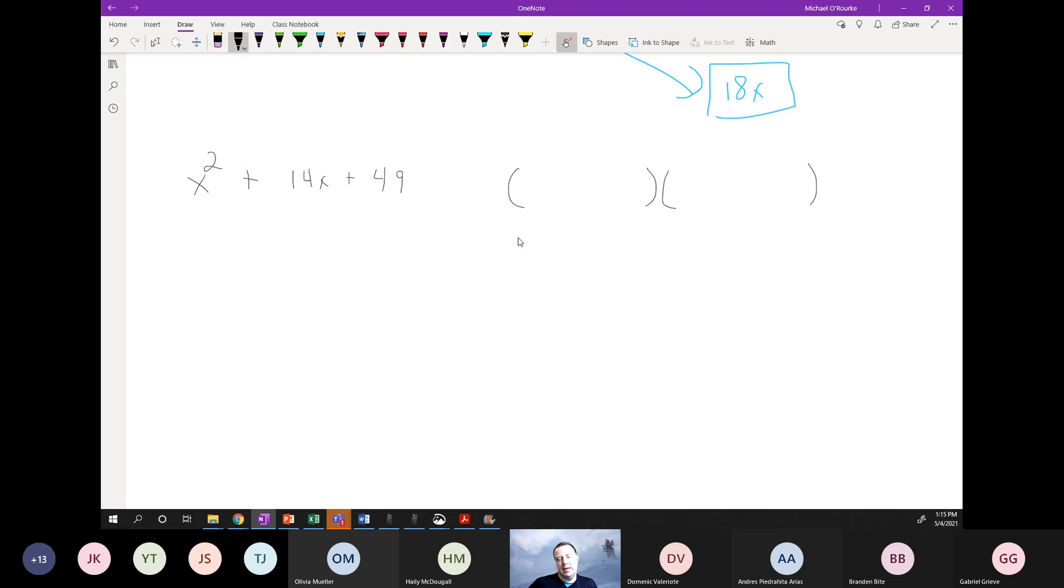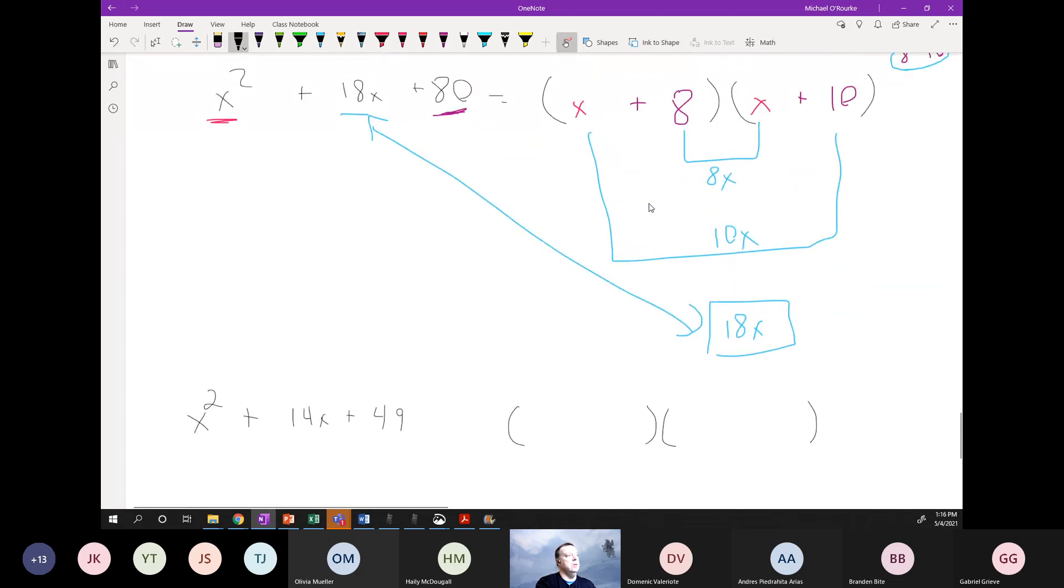So I'll give you 30 seconds. Type your answer in chat right now. Then tell me what you think the answer is going to be here, knowing that two numbers are going to multiply to equal this, right? This one's pretty easy to figure out right now.